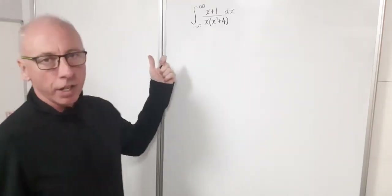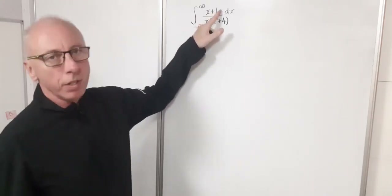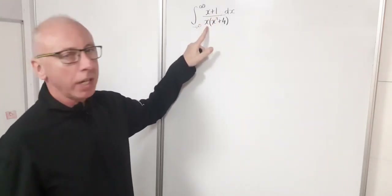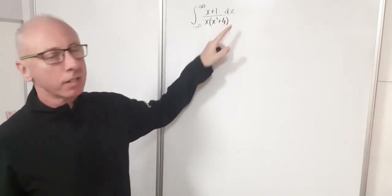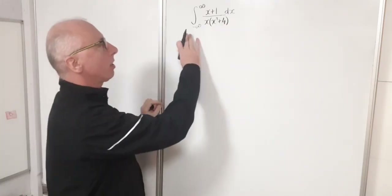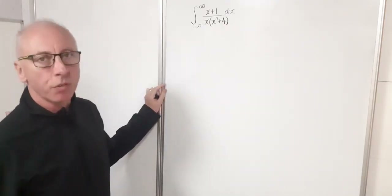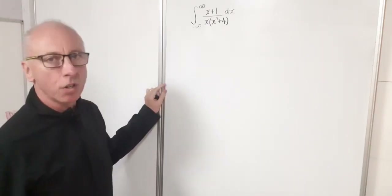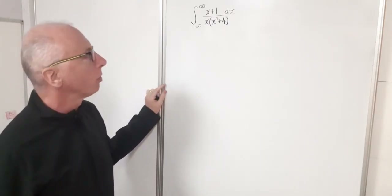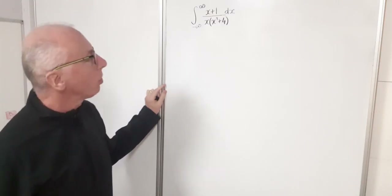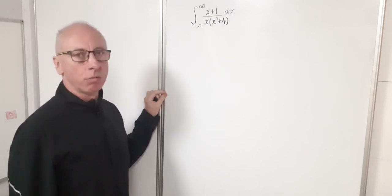In this question we have an integral from negative infinity to infinity of (x+1) in the numerator, and x times (x²+4) in the denominator, with respect to x. To do this integral in real analysis we would need partial fraction decomposition, logarithm and arctangent functions, and some substitutions along the way. So there's a lot to do to get to this integral result.